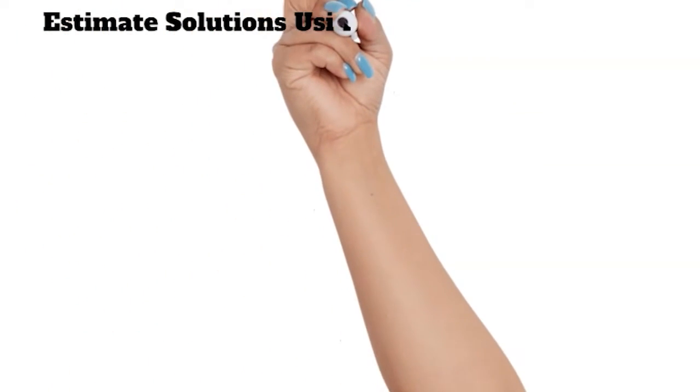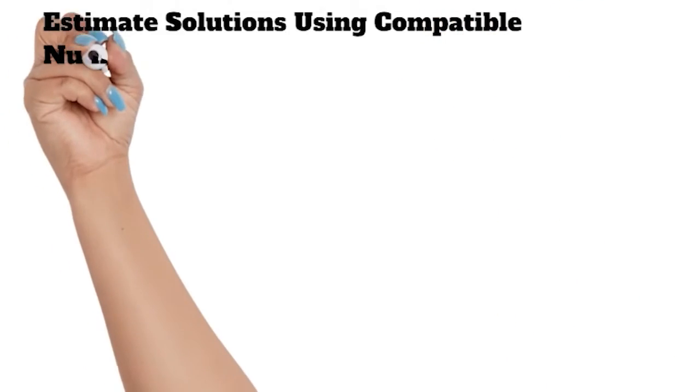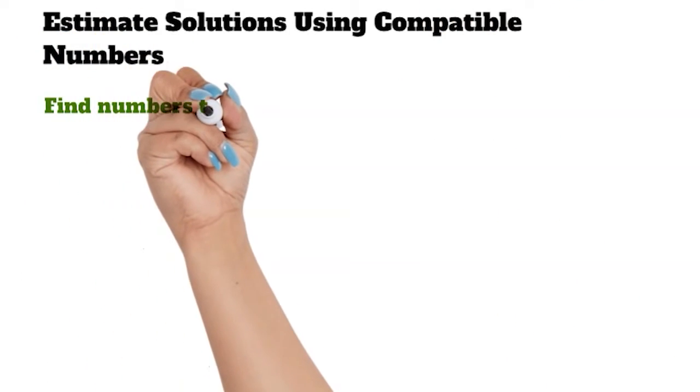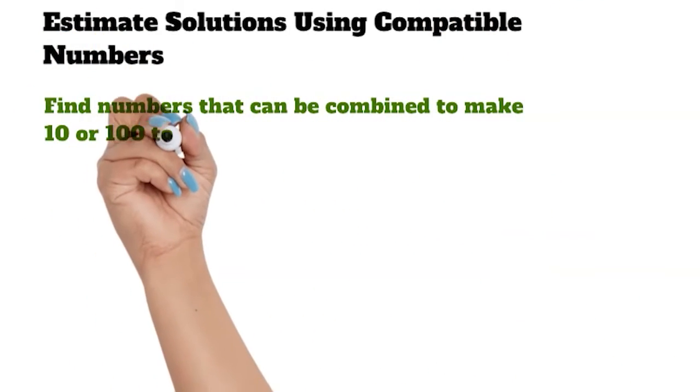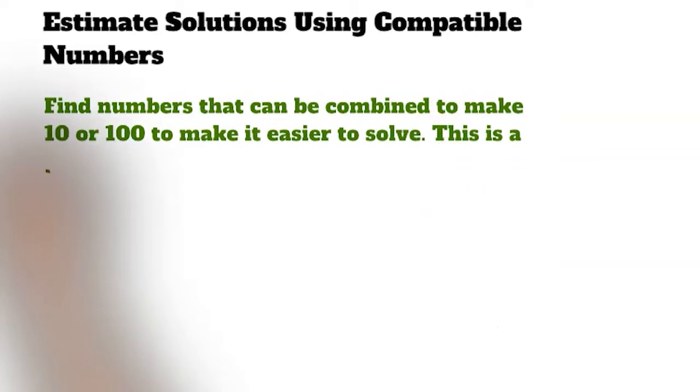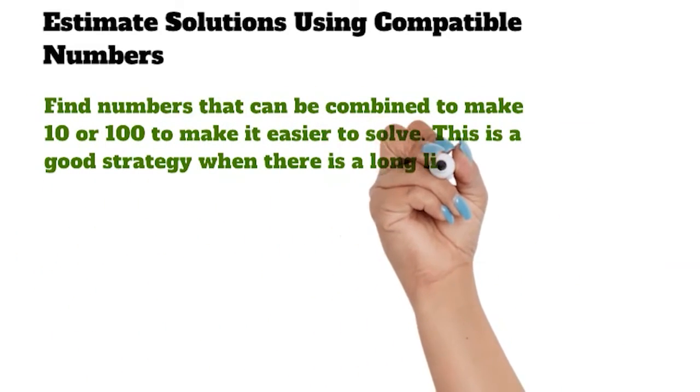Now try estimating solutions using compatible numbers. Find numbers that can be combined to make 10 or 100 to make it easier to solve. This is a good strategy when there is a long list of numbers.